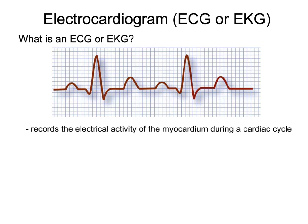The first wave is called a P-wave. The P-wave represents the depolarization of the atria, and during depolarization of the atria, the atria are contracting.